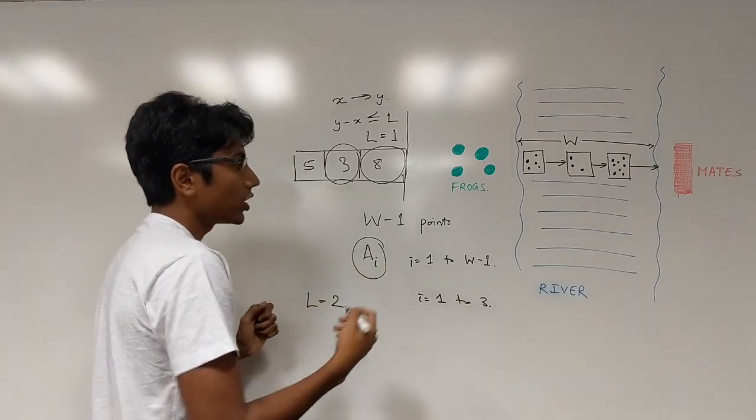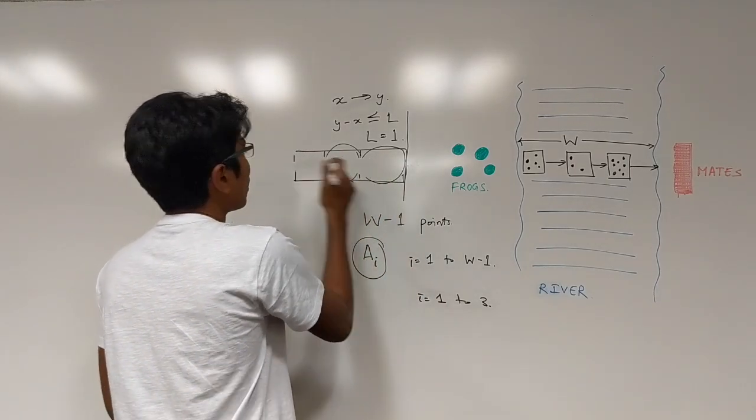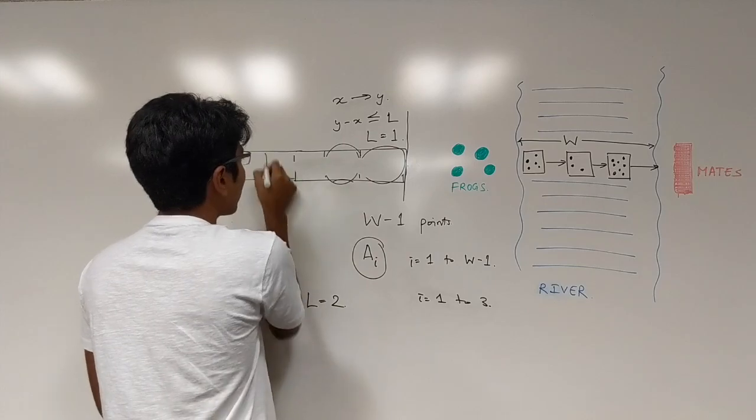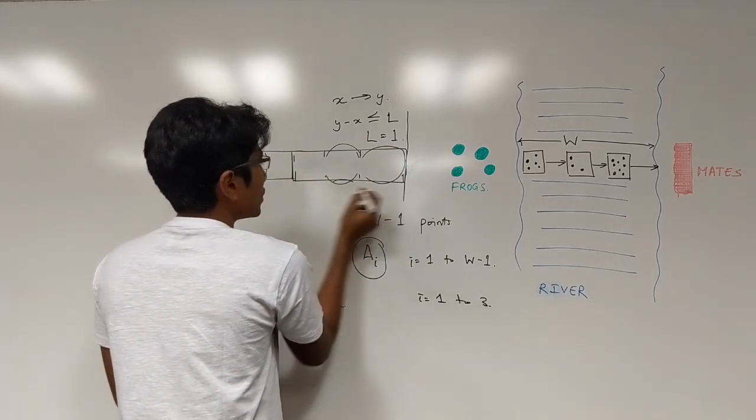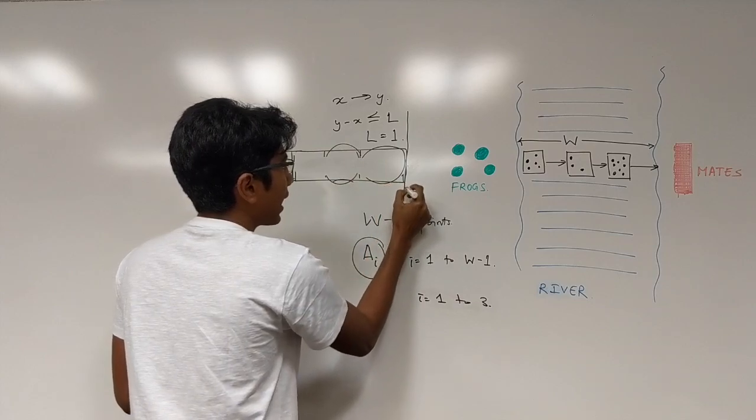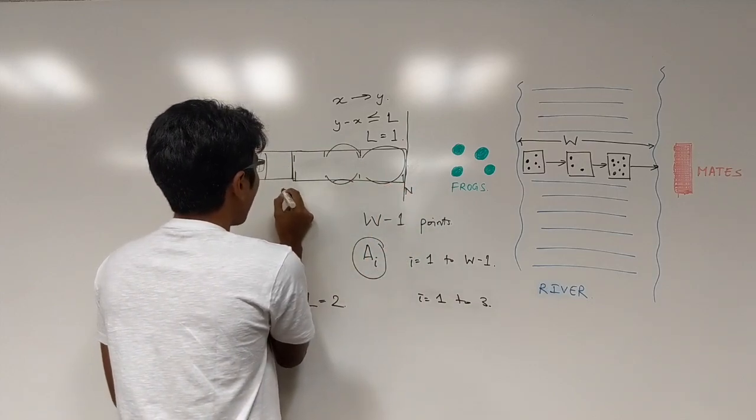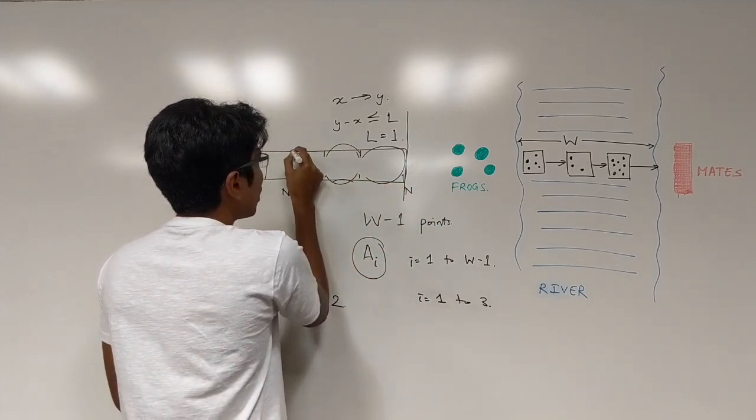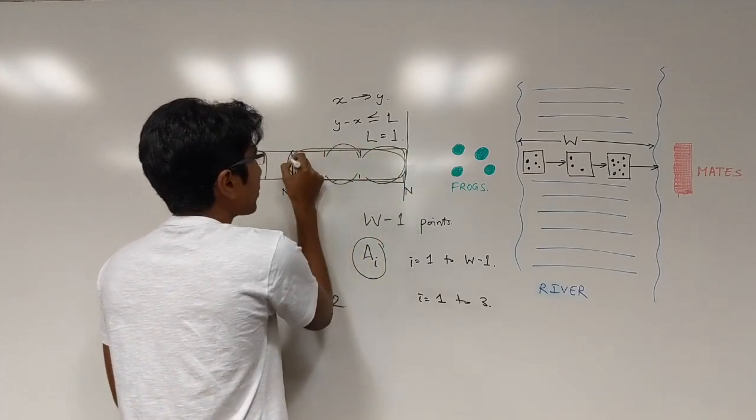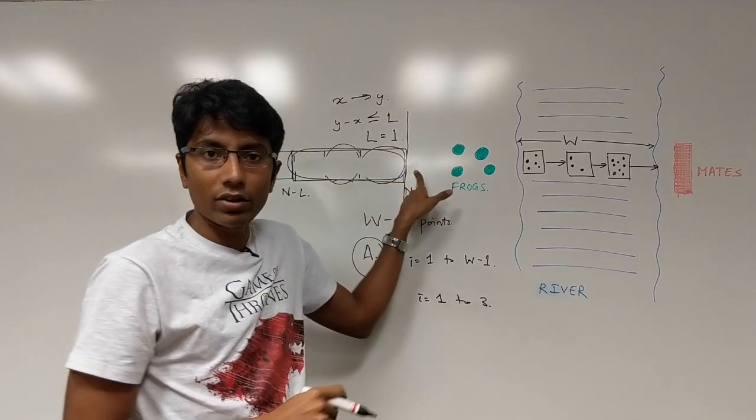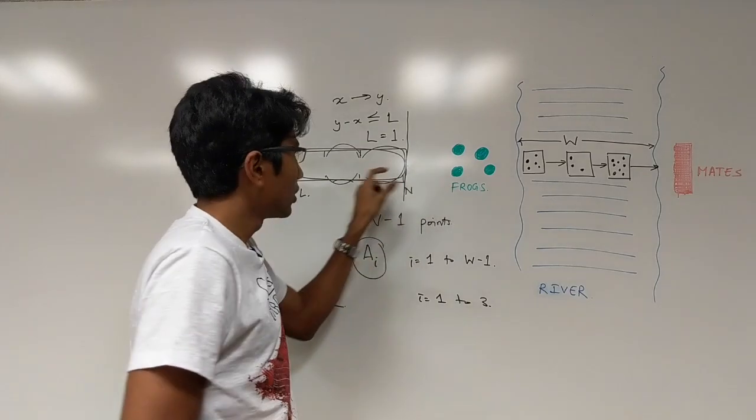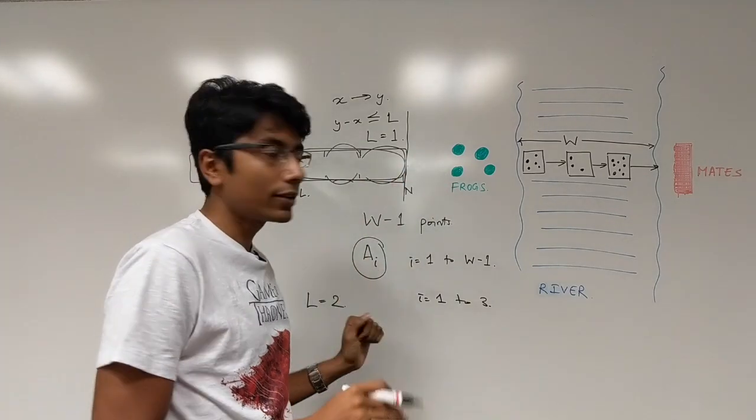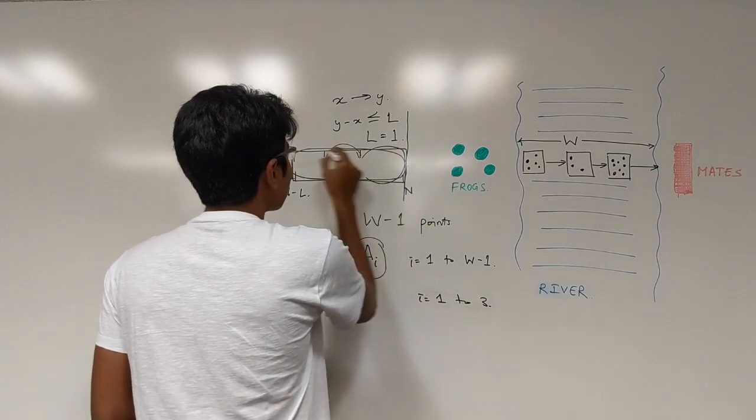So for a general case where we have this big fat array whose size is really big and L is somewhere up to this point, so this is let's say N and this is N-L. Logically, this is the only segment you need to look at if you're on the other side of the bank. These guys are the only people who will jump directly to your point. They're the only people who can make it. So this is the segment you're looking at.